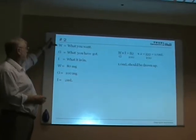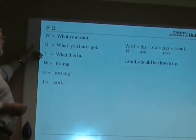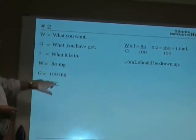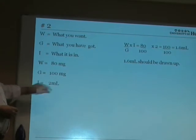So exactly as in the first one we write down want, got and in. So what we want is 80mg, what we've got is 100mg and what it's in is 2ml.